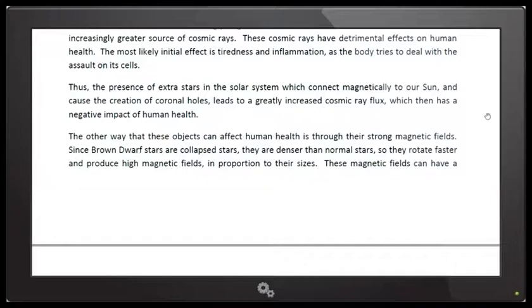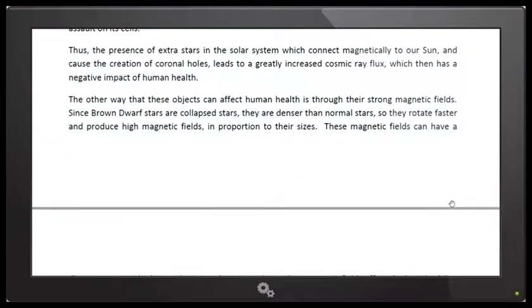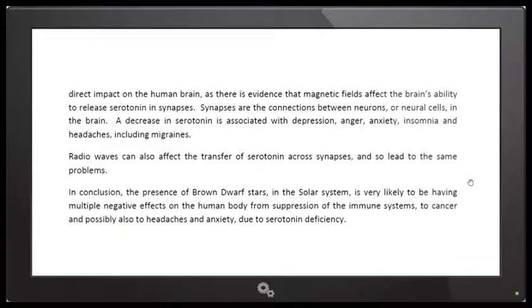And we've gone over a lot of this information in some of my other videos. These magnetic fields can have a direct impact on the human brain as there is evidence that magnetic fields affect the brain's ability to release serotonin in synapses. Synapses are the connections between neurons or neural cells in the brain. A decrease in serotonin is associated with depression, anger, anxiety, insomnia, and headaches, including migraines. Radio waves can also affect the transfer of serotonin across synapses and so lead to the same problems.